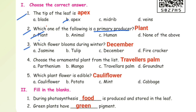Third one: which flower blooms during winter? The answer is December flower. Fourth one: choose the ornamental plant from the list. Ornamental plant means alangkara thawuram, the answer is traveler's palm. Fifth one: which plant flower is edible? The edible flower answer is cauliflower.